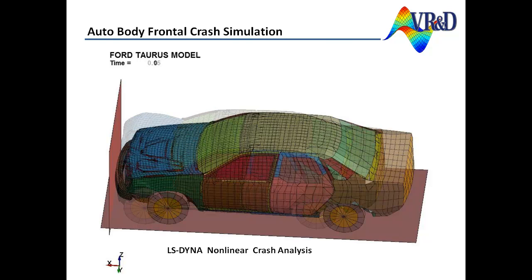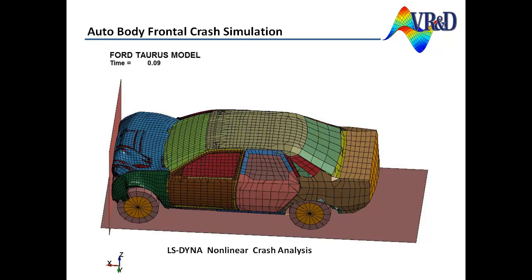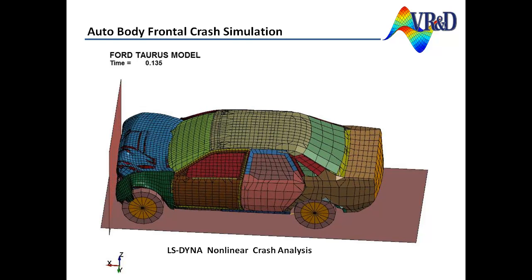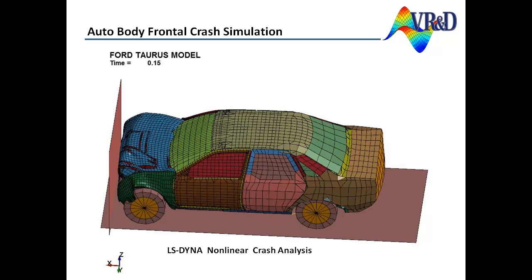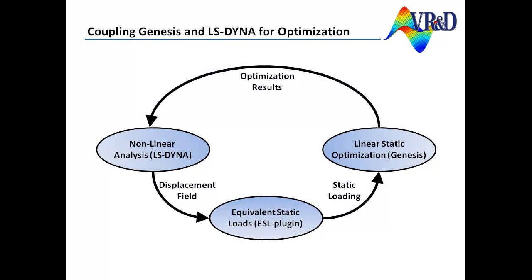By coupling crash simulation with a standalone optimization program, the auto body structure can be tuned for improved crash performance. But due to the long computation time required by each simulation, typically fewer than 10 designable parameters can be considered. In contrast, the Genesis linear structural optimization program, which tightly couples design optimization with linear finite element analysis, is routinely being used to solve large scale problems with over 100,000 designable parameters.